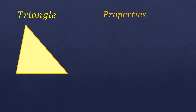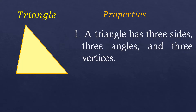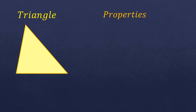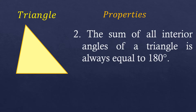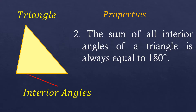The first property is a triangle has three sides, three angles, and three vertices. The second property is the sum of all interior angles of a triangle is always equal to 180 degrees. So where are these interior angles? These are the interior angles, and if you add them,